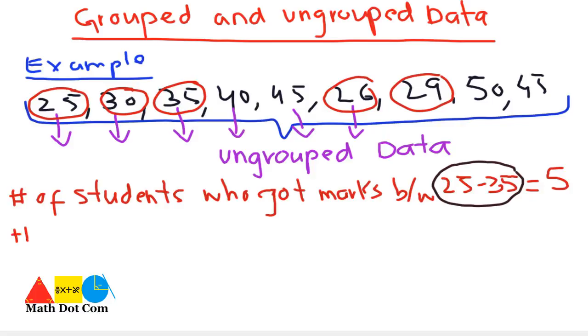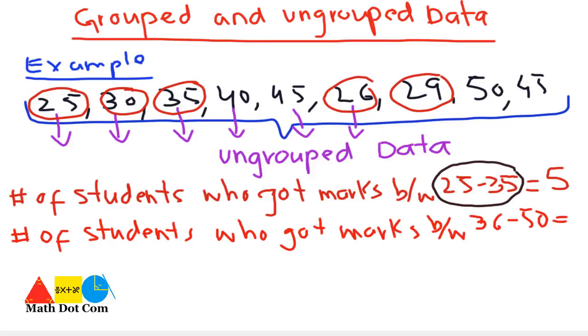Another grouping will be number of students who got marks between 36 and 50. Let's see: 1, 2, 3, and 4. There are 4 students who got marks between 36 and 50.